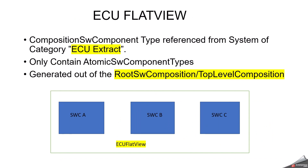ECU flat view means it is an ECU extract. There are two concepts to understand: system extract and ECU extract. System extract is done for a subset of one or more ECUs of a vehicle and facilitates collaboration between OEMs and suppliers. ECU extract is the definition of one ECU only and is generated out of the system extract. In the ECU flat view, the composition software component type referenced from a system of category ECU extract can contain atomic software component types. It is generated out of the root software composition or top level composition, and after ECU extraction, only software component types are visible — this process is generally called flattening.